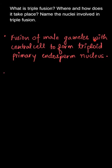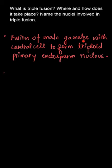Fusion of a male gamete with the central cell, which is diploid, to form a triploid primary endosperm nucleus is called triple fusion. It is called triple fusion because it involves three nuclei — the central cell has two nuclei and one comes from the male gamete.